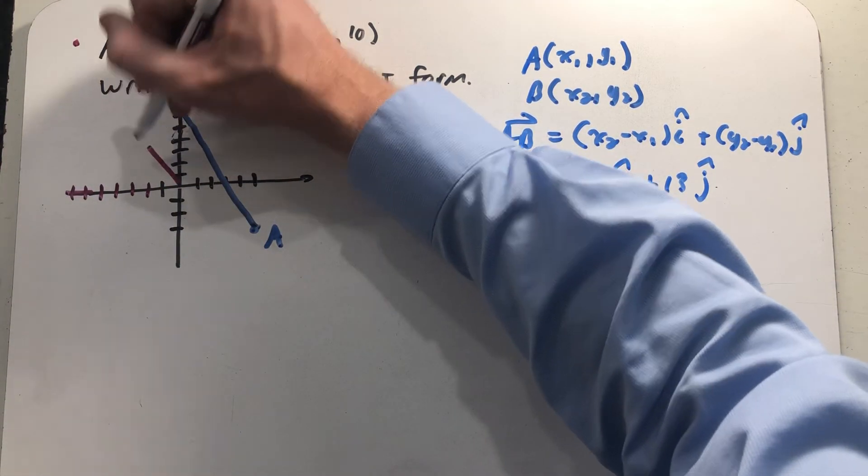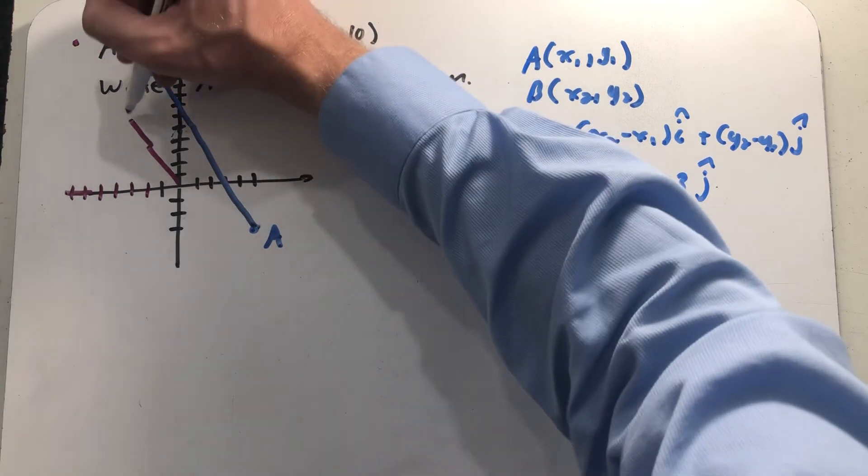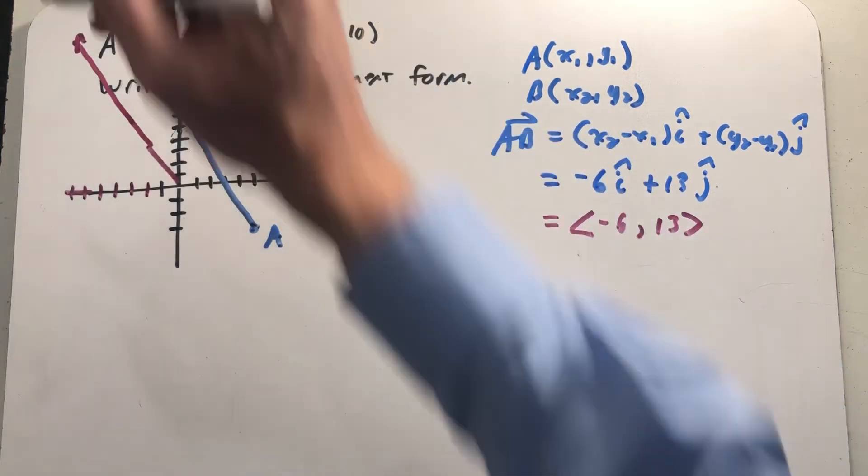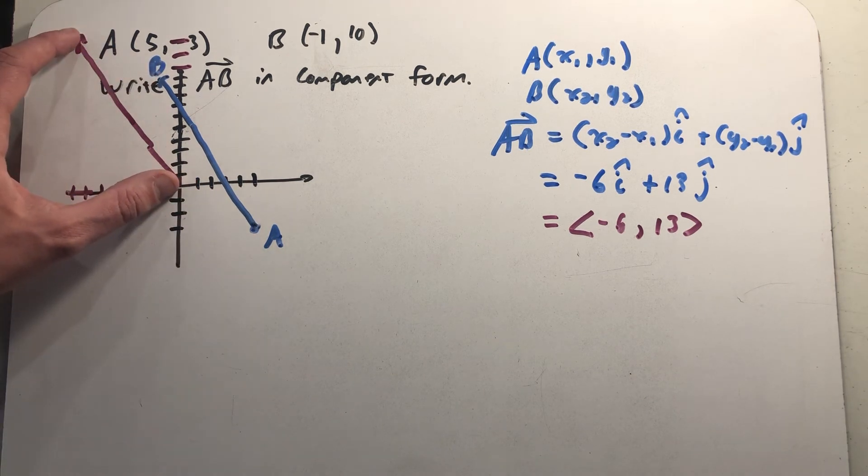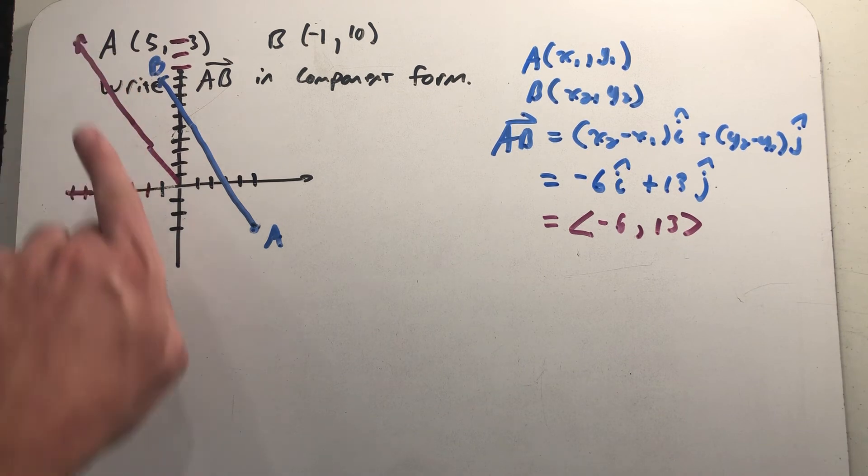And if I did this perfectly to scale, which of course there's no guarantee of here, and if I drew straight lines, which we'll pretend, then we see that those vectors are parallel and have the same length, which means since they're both going up from left to right, they have the same direction and the same length, so they are equal vectors.